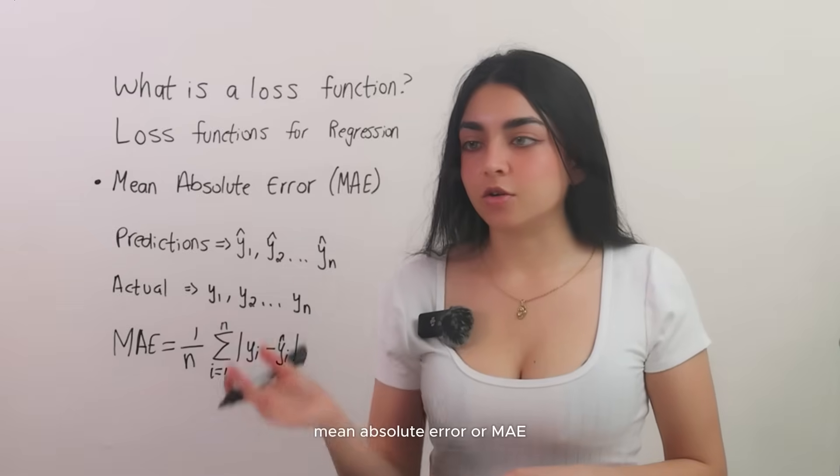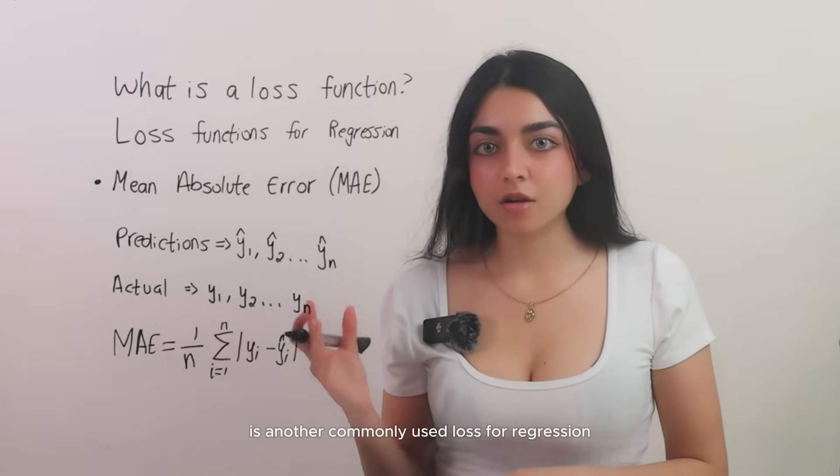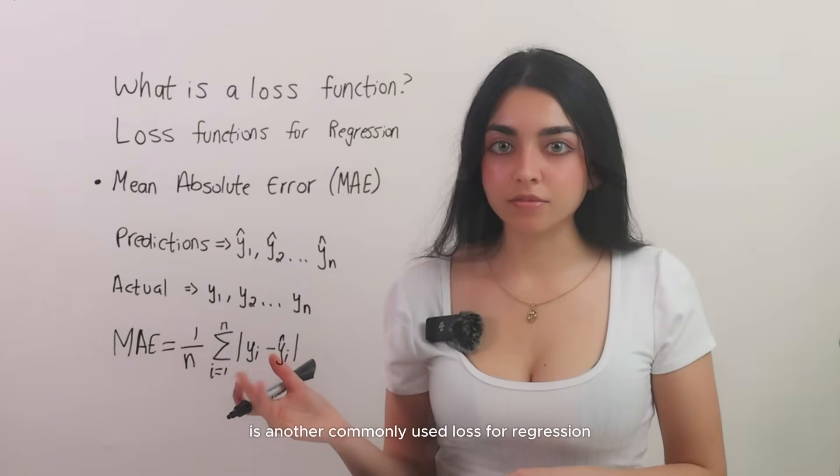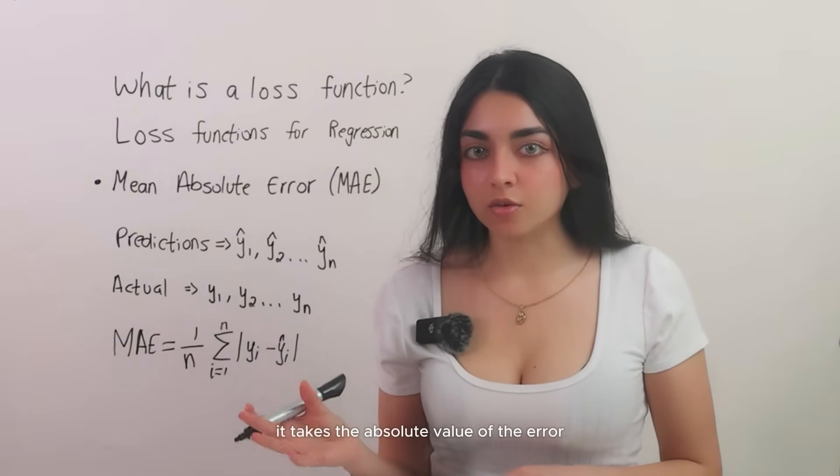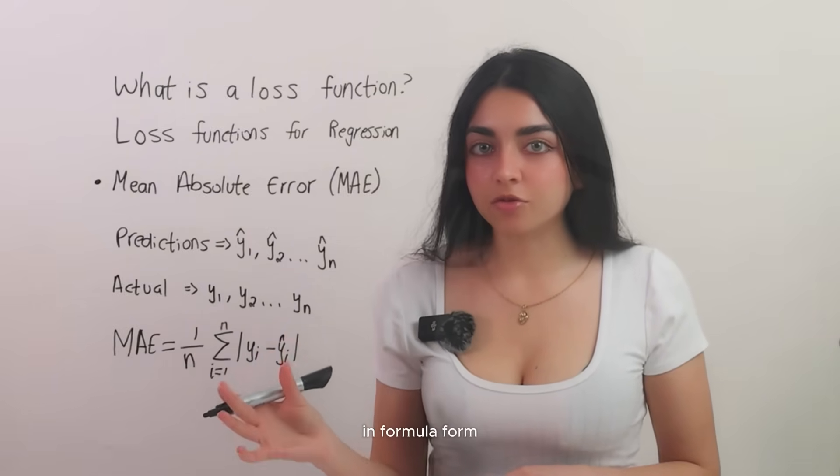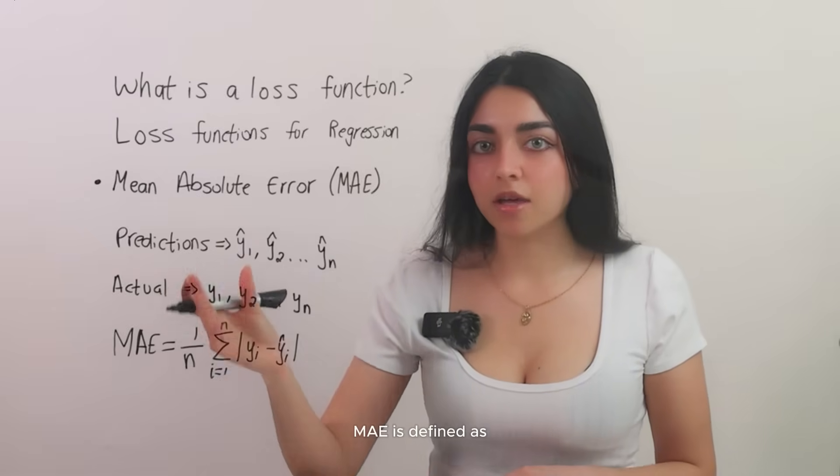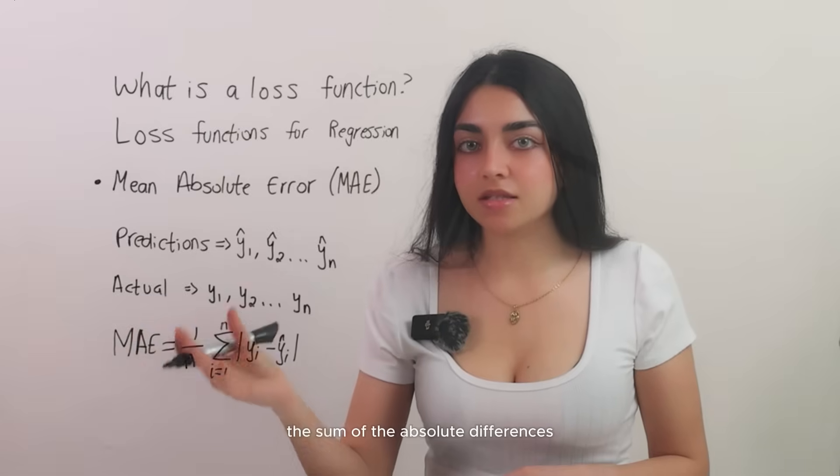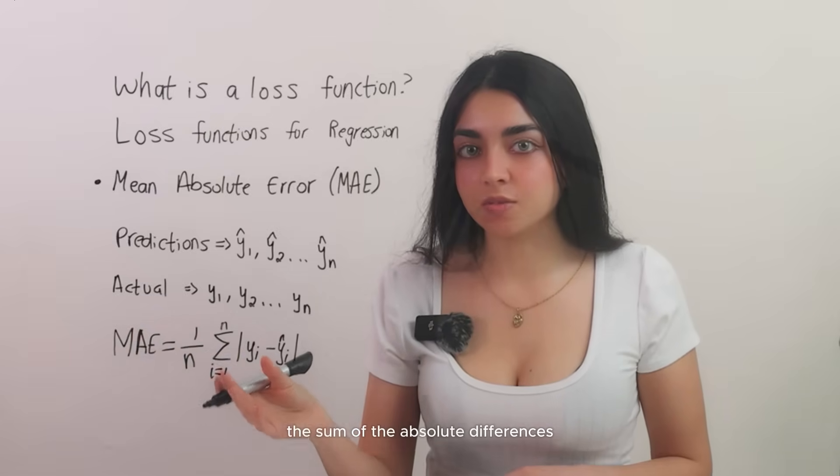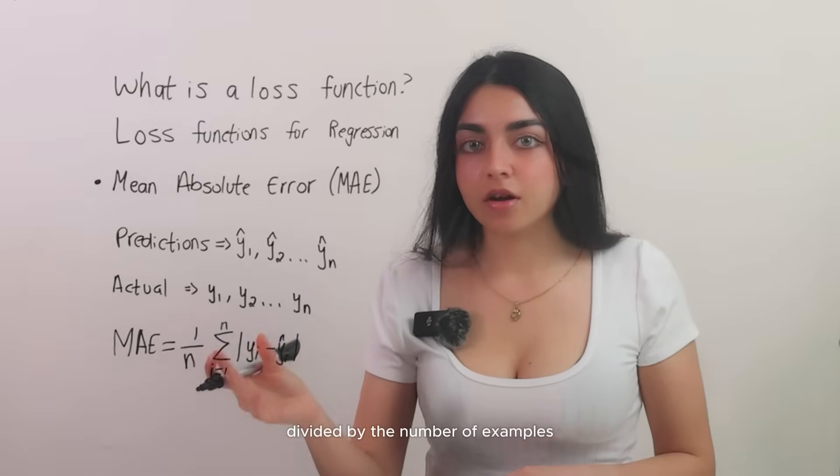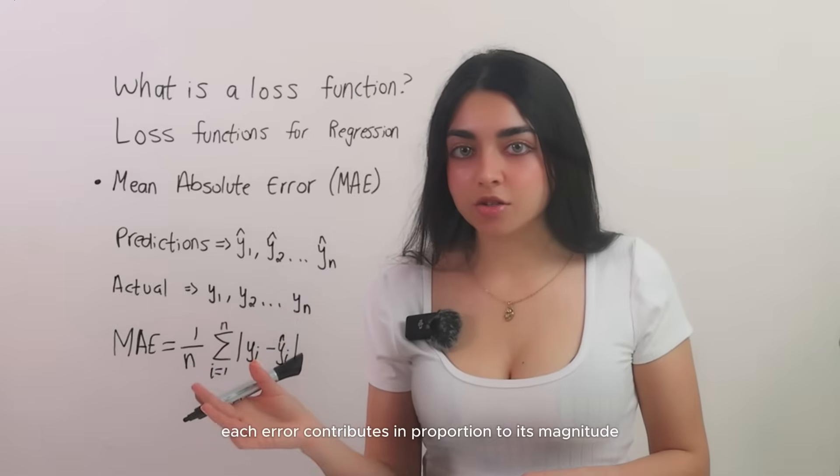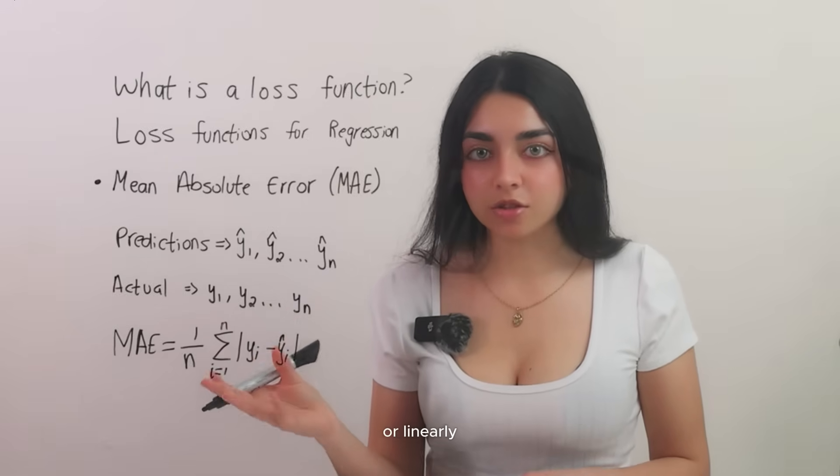Mean absolute error, or MAE, is another commonly used loss for regression. Instead of squaring the errors, it takes the absolute value of the error. In formula form, using the same definitions as before, MAE is defined as the sum of the absolute differences between the predicted and the true values, divided by the number of examples. Each error contributes in proportion to its magnitude or linearly.